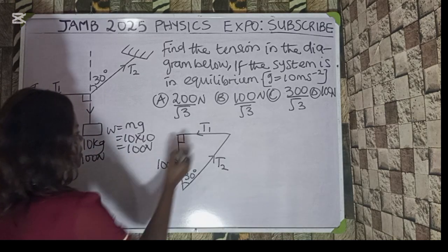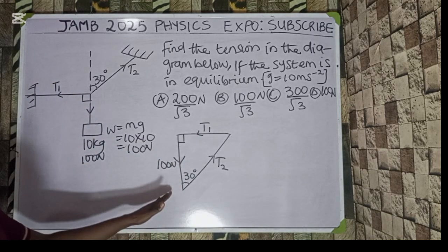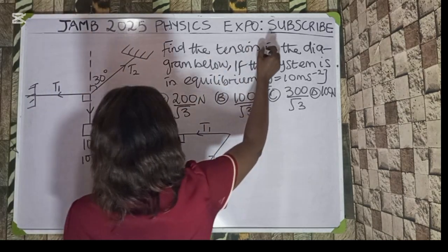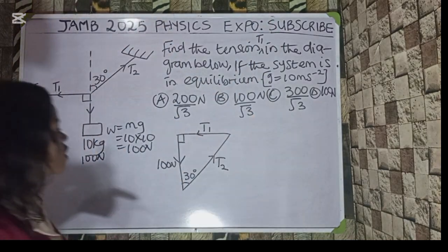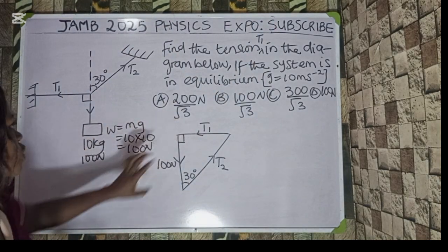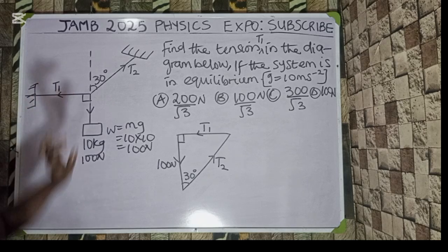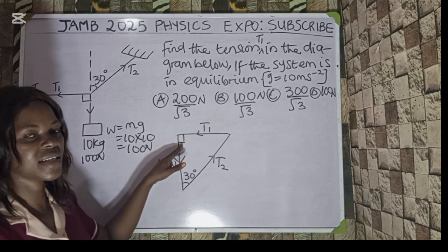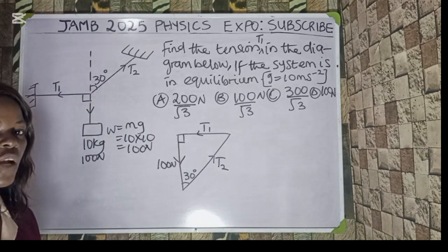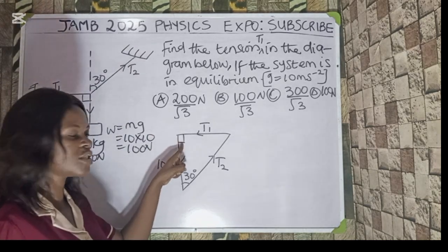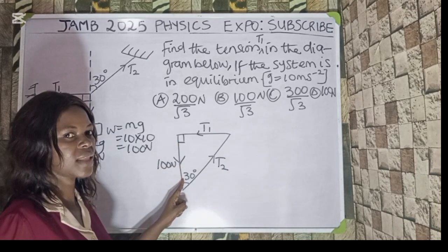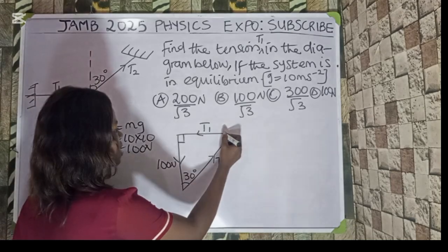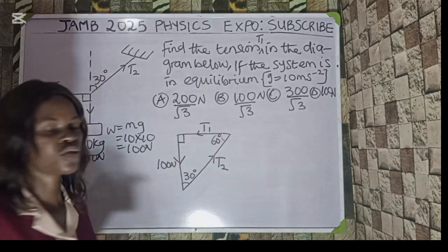Now that's the first step — I've already resolved this. We are actually looking for tension T1. So the next step is to find T1. Now, if here is 90 degrees, the sum of angles in a triangle equals 180. If here is 90 and here is 30, that gives 120, so it's left with 60. So this angle here becomes 60 degrees.